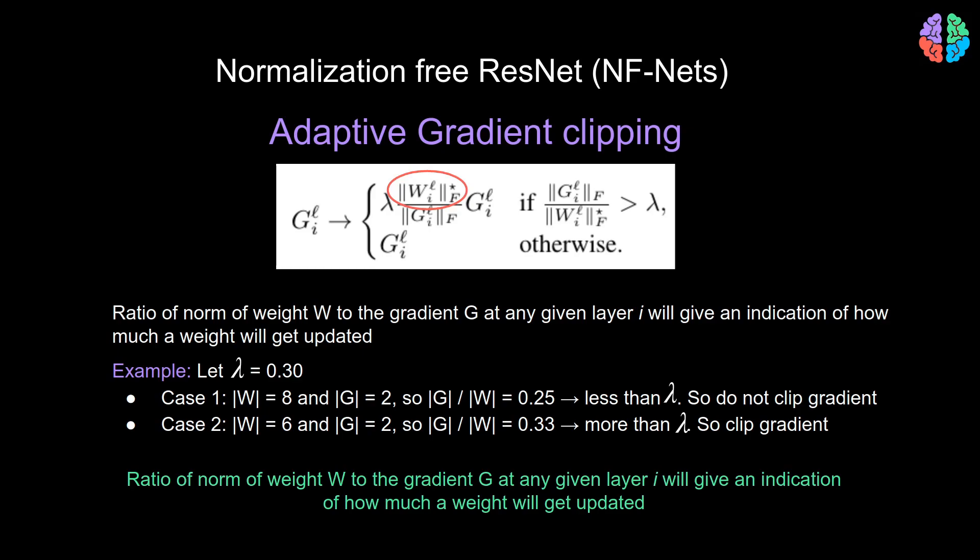To understand this, let's take two cases with simple toy examples. Let's fix the threshold lambda to 0.3. In the first case, let's say the magnitude of W is 8 and the magnitude of gradient is 2. In this case, gradient clipping doesn't happen because the ratio is less than the threshold lambda. However, in the second case, the magnitude of our weight is 6 and the magnitude of our gradient is 2. Here, the ratio between the two is 0.33, which is more than the threshold 0.3. So the gradient gets clipped. To see how clipping now depends on the magnitude of the weight W. So this is adaptive gradient clipping, as the clipping adapts to the weight.